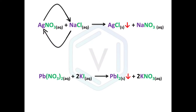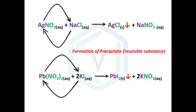Lead nitrate reacts with potassium iodide: lead and potassium switch places to form lead iodide as the precipitate, along with potassium nitrate. In all these examples of double displacement reactions, one of the products formed is a precipitate. However, double displacement reactions are not always accompanied by precipitate formation.